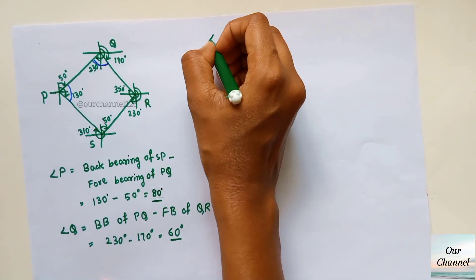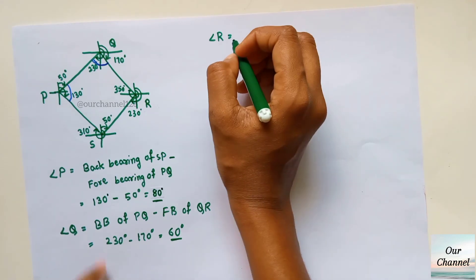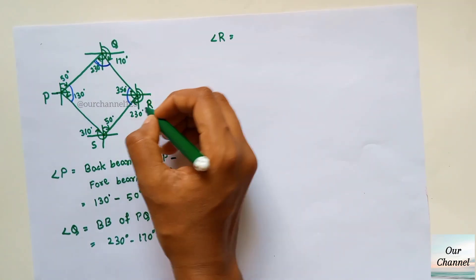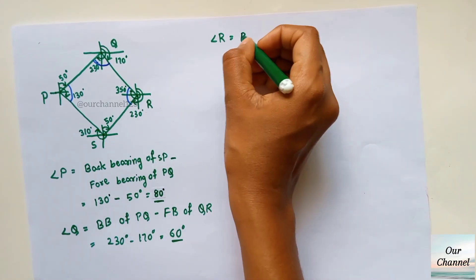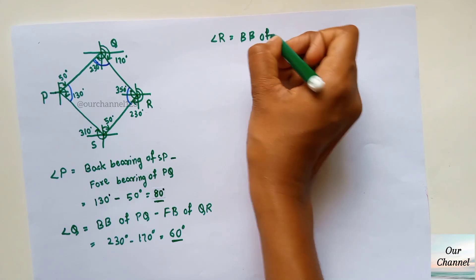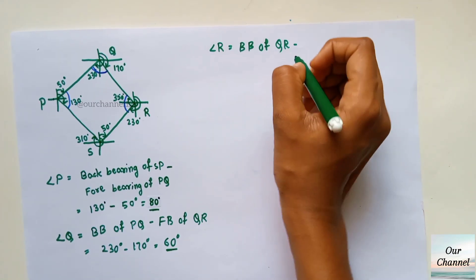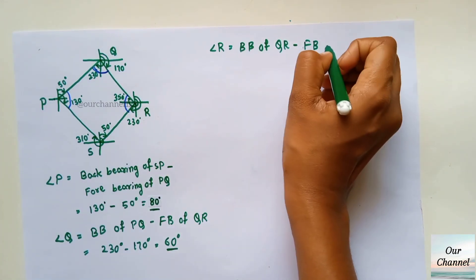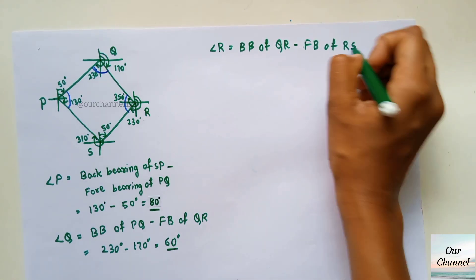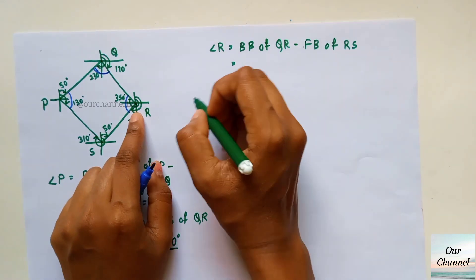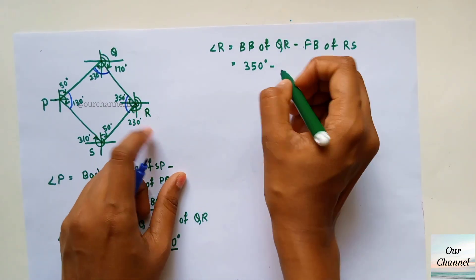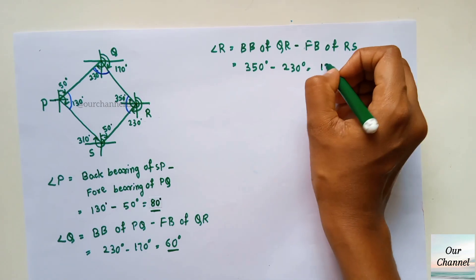Next, angle R equals 350 degrees minus 230 degrees, where 350 degrees is the back bearing of QR and 230 degrees is the fore bearing of RS. So angle R equals 350 degrees minus 230 degrees, which gives us 120 degrees.